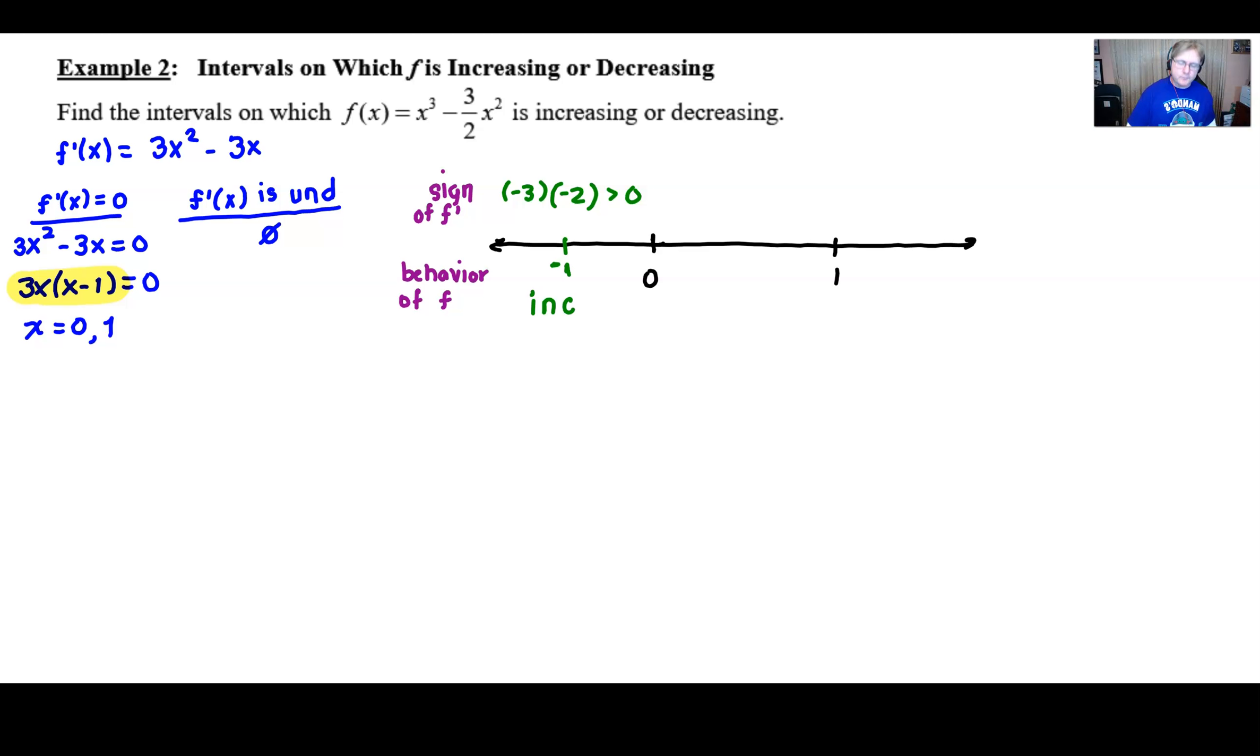You're going to repeat that for as many intervals as we have. Our next interval 0 to 1 is a little bit, not so friendly because we have to use a fractional value. Anything between 0 and 1 would work. I'm going to use 1/2. 3 times 1/2, of course, is 3/2. 1/2 minus 1 is negative 1/2. And again, I don't really care that that's negative 3/4. It's great that we know that. I just care that it's a negative number. And so I'm going to denote that as such. And then I know that we're going to decrease between 0 and 1.